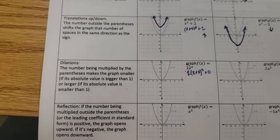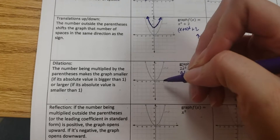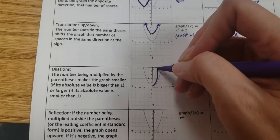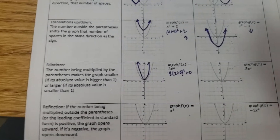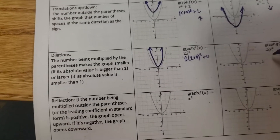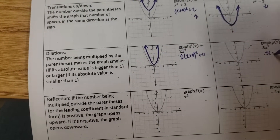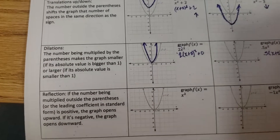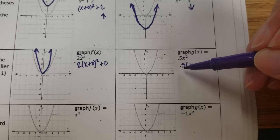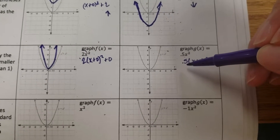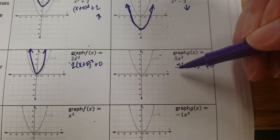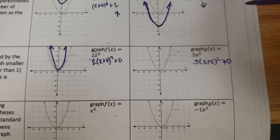The graph of 2x squared is tucked inside the graph of x squared. Conversely, we could rewrite 0.5x squared as 0.5x plus 0 squared plus 0 in true vertex form. We're multiplying by a number less than 1, between 0 and 1. What's actually going to happen is our graph gets bigger — because in opposite land, multiplying by a decimal seems like it would make the graph smaller, but it actually makes it bigger.